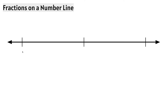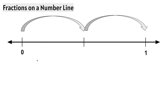This number line also has the whole numbers 0 and 1, but we notice there's a tick mark in between the 0 and the 1. Let's count how many spaces there are between the 0 and the 1: 1, 2. Which means if we're labeling this number line with fractions, we know the denominator for each tick mark will have to be 2. At the 0, we can say we have 0 halves. When we jump to the next tick mark, we can say we have 1 half. When we jump to the next tick mark, we can say we have 2 halves.